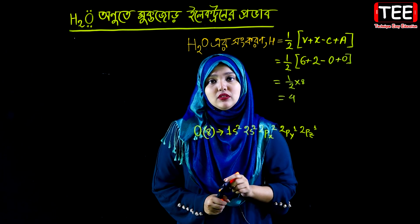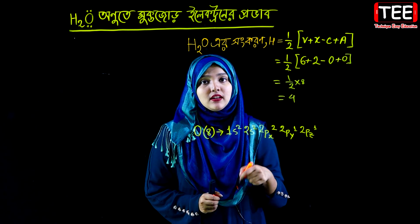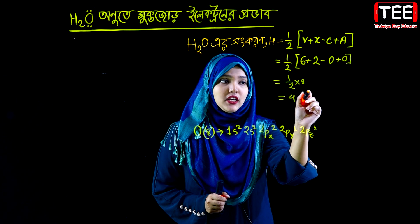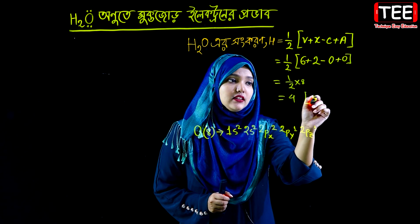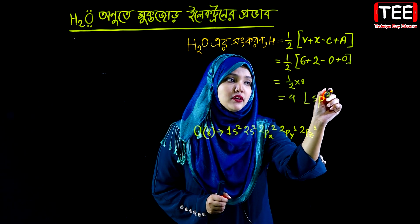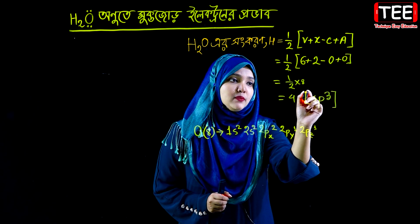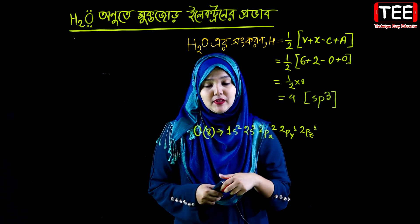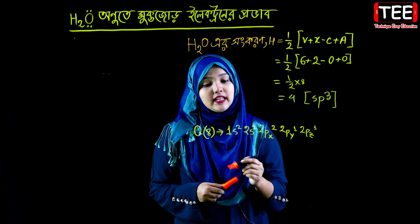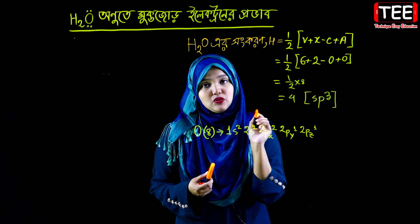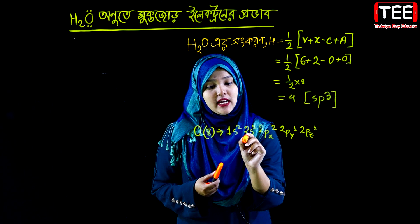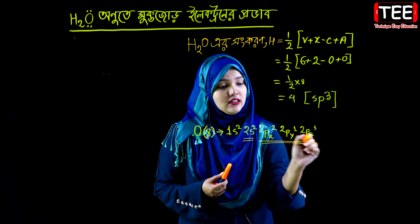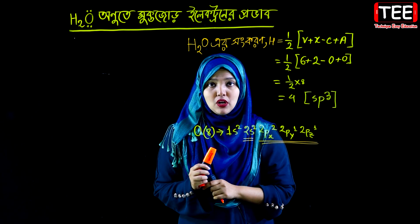If Hr equals 4, then Hr is equal to 4. This means the hybridization is sp³.